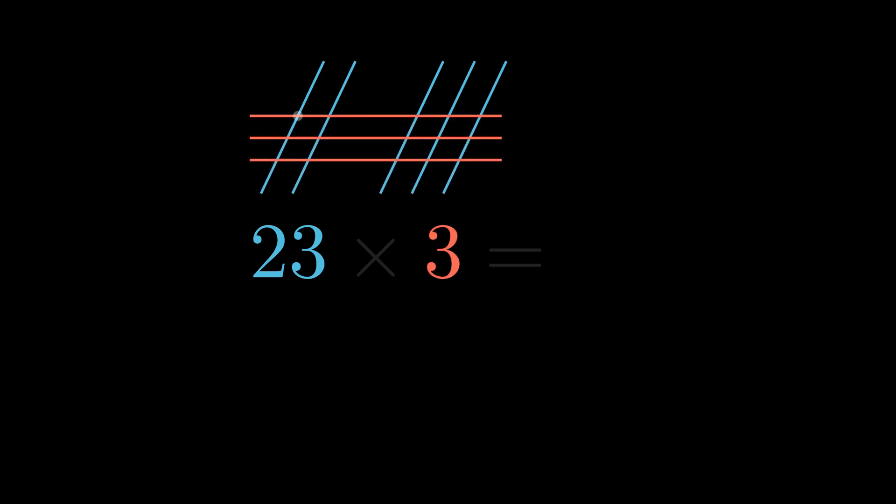Let's see what happens where bigger numbers are involved. Now for number 23 we have two lines for the tens and three lines for the ones, and just three lines for the single digit number we multiply by. Here we have two groups of intersection points, nine points for the right group and six points for the left, so the product is 69.